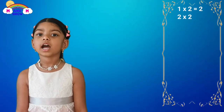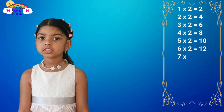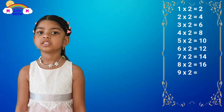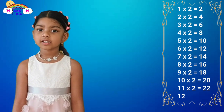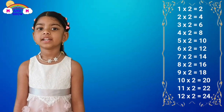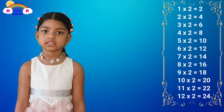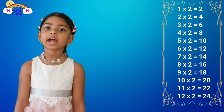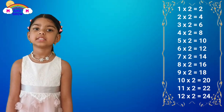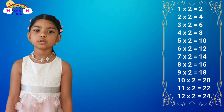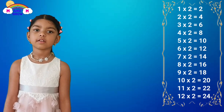Let me sing the two-time table for you, it goes like this. One time two is two, two time two is four, three time two is six, four time two is eight, five time two is ten, six time two is twelve.